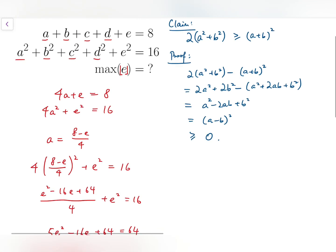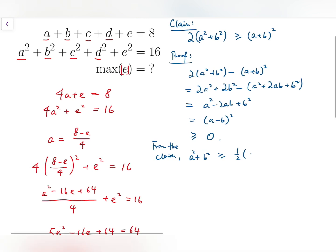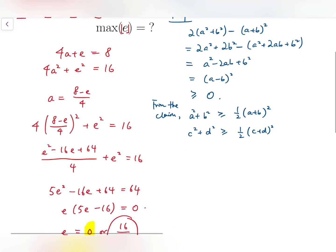Now from this, you can say that from the claim, this is larger than one half of A plus B all squared. And similarly, we have C squared plus D squared is at least one half of C plus D all squared.